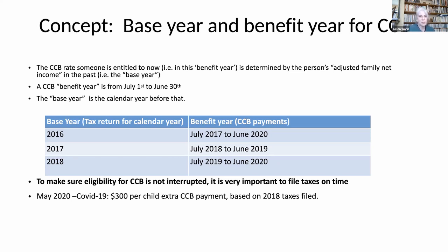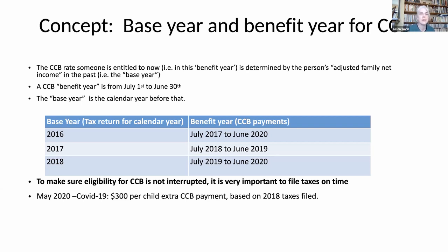A few additional points for this year: there was a COVID supplement to Canada Child Benefits in May 2020, based on family net income for the 2018 tax year. Clients who didn't receive that May 2020 extra payment likely didn't file their 2018 taxes. It's not too late — if you find anyone in that situation, encourage them to file, and they'll be paid that May benefit as well as child tax benefits for the whole benefit year based on 2018 taxes.